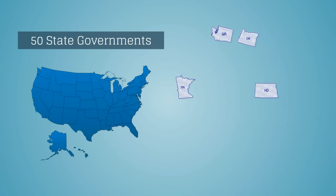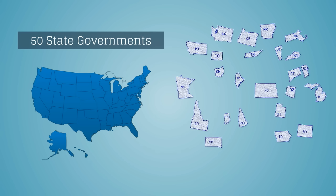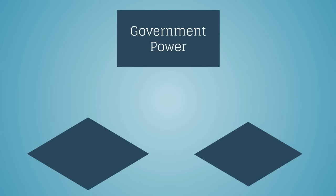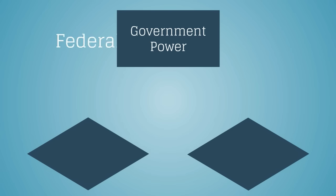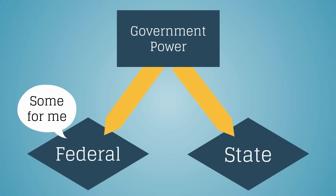In addition to the national government in Washington, D.C., there is a government in each state — so, 50 state governments. Because of federalism, some powers belong to the federal government and other powers belong to the state governments.